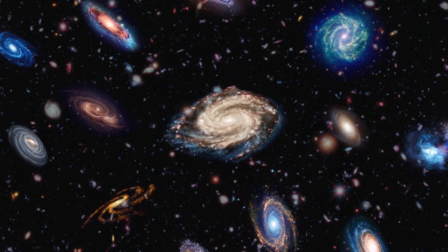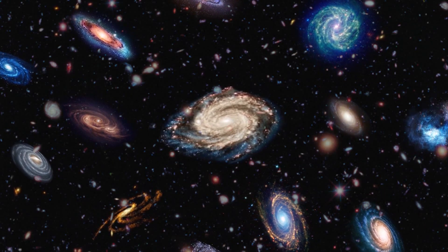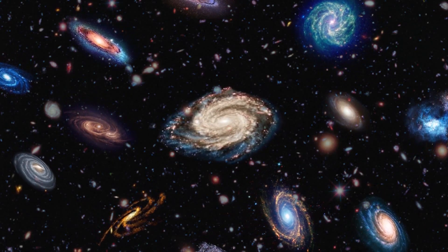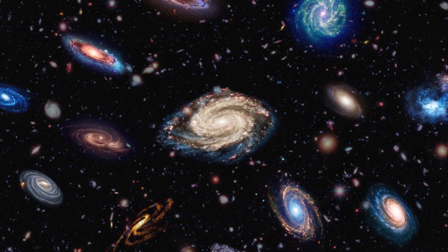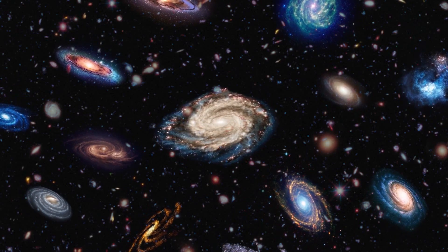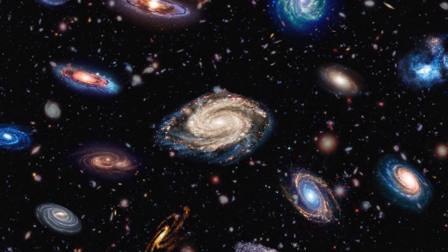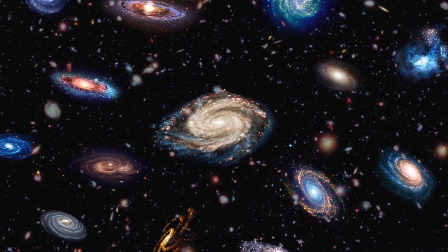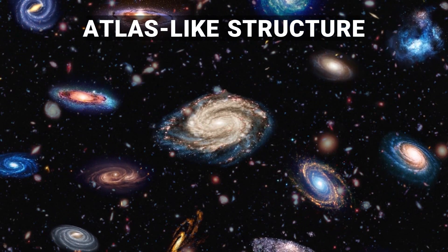Saleh theory also predicts the existence of rotational systems larger than the Milky Way. For example, for the next system larger than Milky Way, a large number of galaxies, including the Milky Way, are rotating around the central supermassive galaxy. We named the system as Atlas-like structure, and the central supermassive galaxy as central supermaster galaxy.